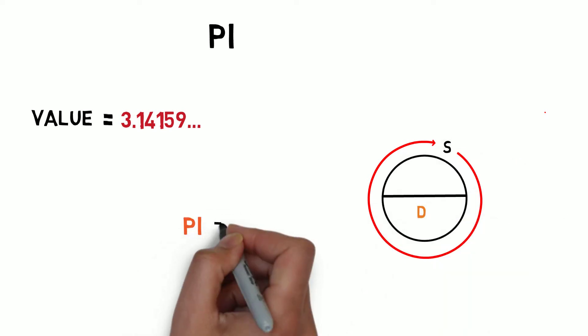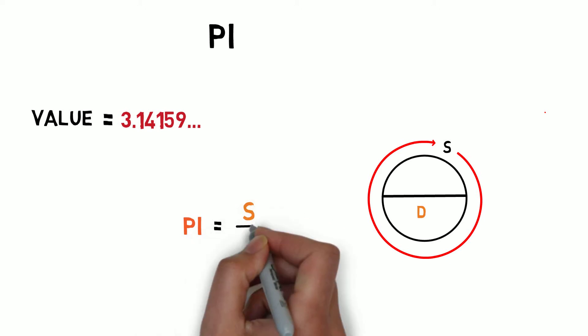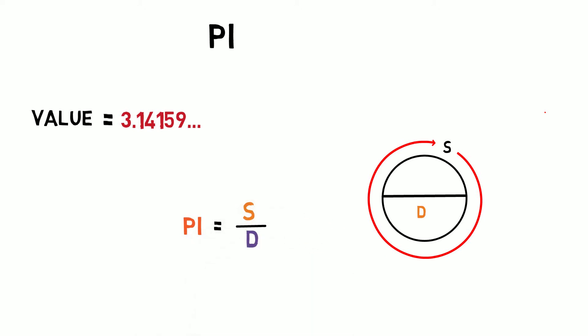You can calculate it easily by taking the circumference of the circle to the ratio of the diameter. It is often written using this symbol.